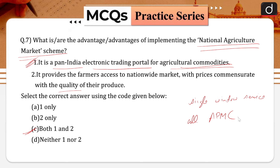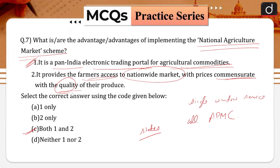Agriculture marketing is administered by the states as per their agri-marketing regulations, under which the state is divided into several market areas, each administered by a separate APMC which imposes its own marketing regulation. It also provides farmers access to the nationwide market with prices commensurate with the quality of their produce.